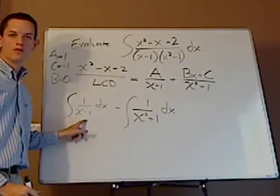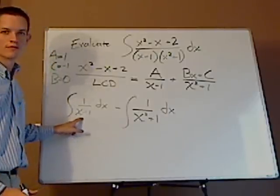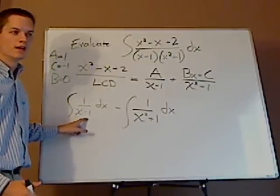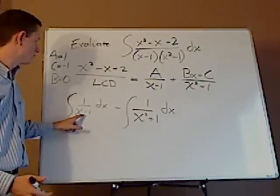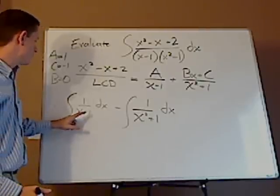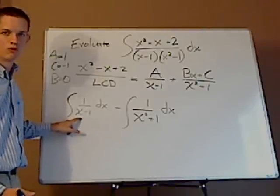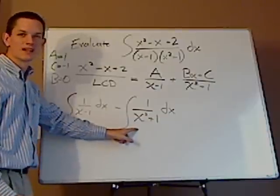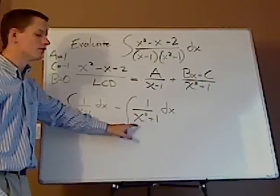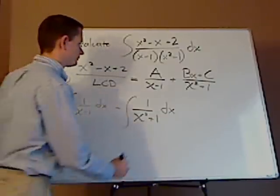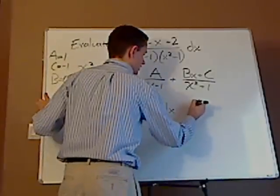Now, these are both very straight, well, this is very straightforward. This is going to be natural log with the absolute value of this. Now, this is slightly more complicated. This is going to involve trig substitution. And so let's do that real quick.